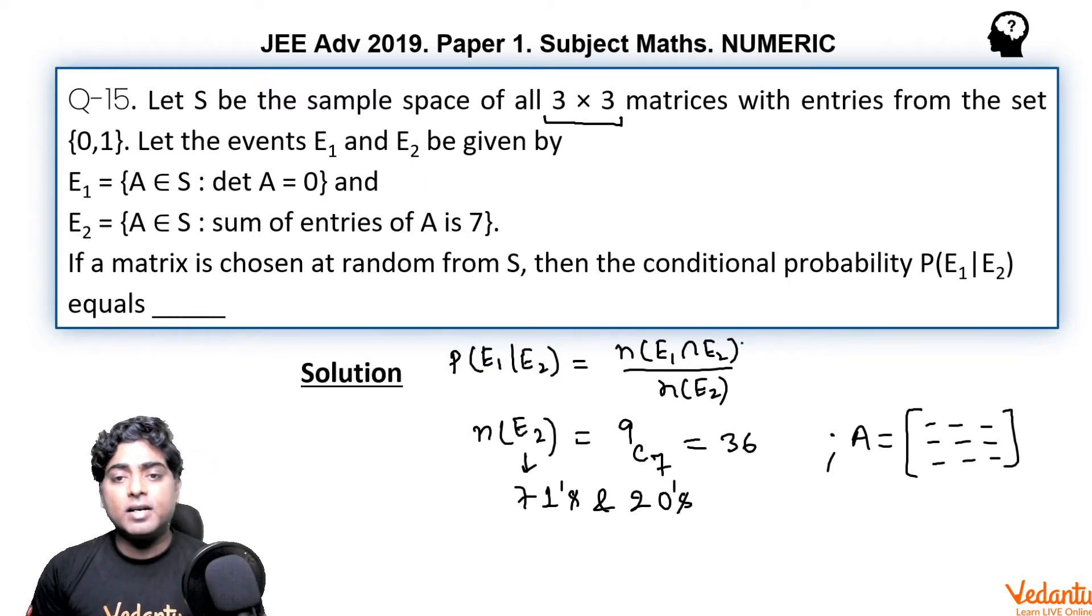Now how can you find N(E1 ∩ E2)? E1 was the set of all those matrices whose determinant is 0. So we need not to check E1. In fact we have to find number of cases belonging to E1 ∩ E2, so E1 should be seen with E2.